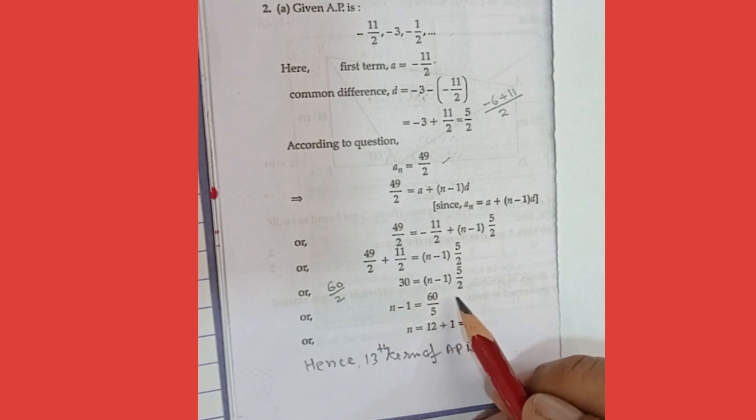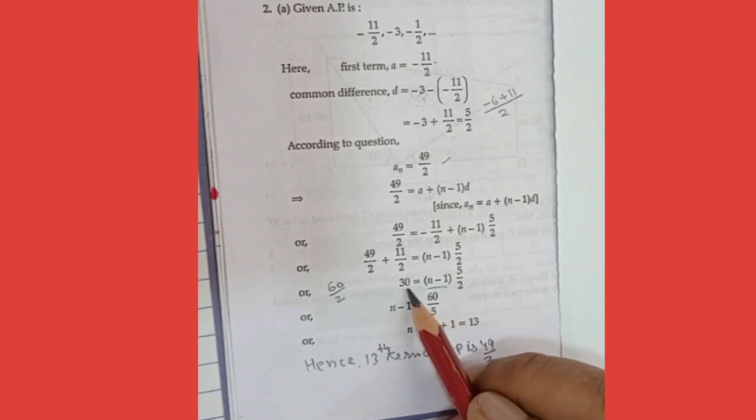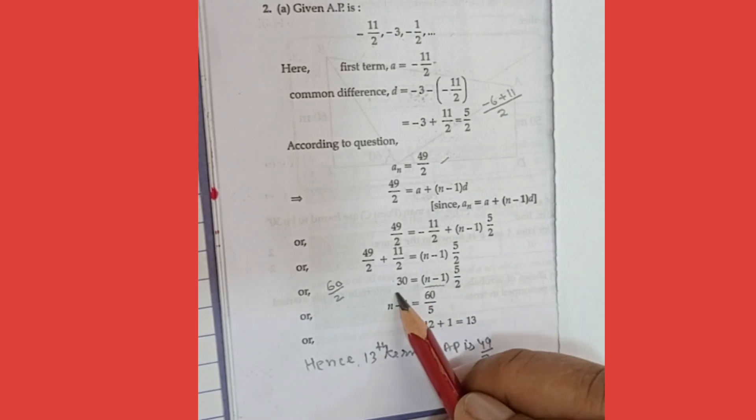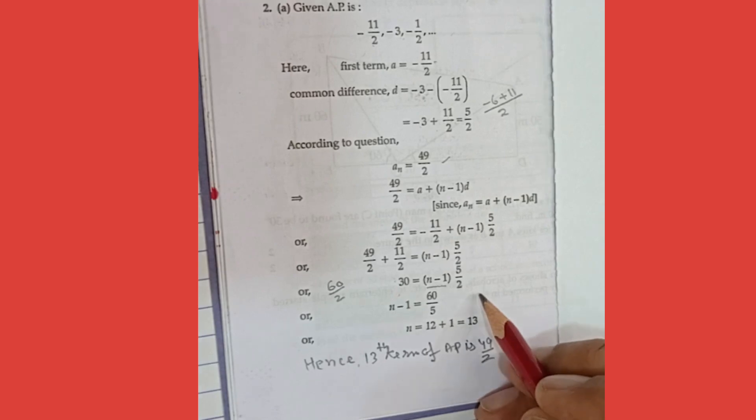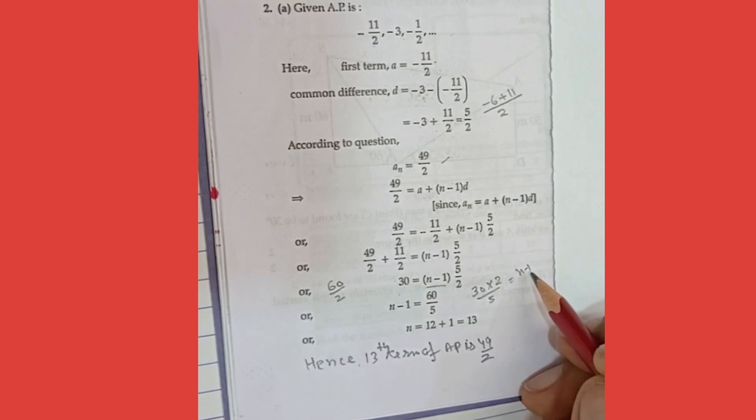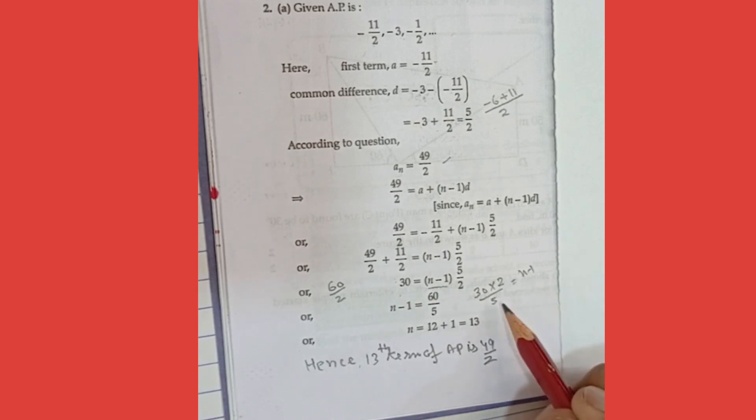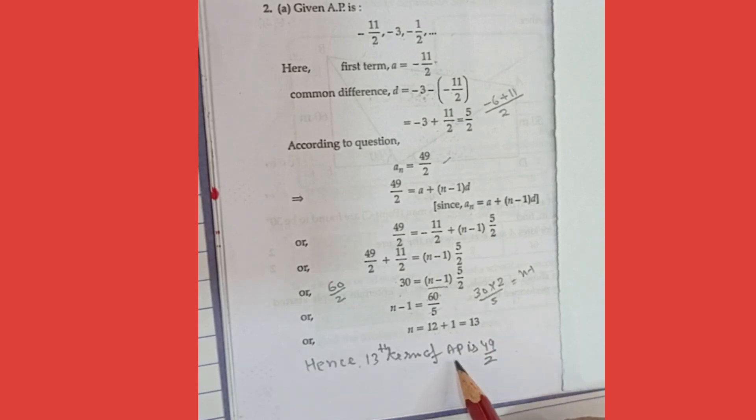Now simple, we will do cross multiply here. So this 2 will go upper side, 30 into 2, and this 5 will come down side. So 30 into 2 become 60. Or you can do it this way also: 30 into 2 upon 5 is equal to N minus 1. Then cut down it and getting 12. This one we transfer to right side, so 12 plus 1 is 13. Hence 13th term of AP is 49 upon 2.